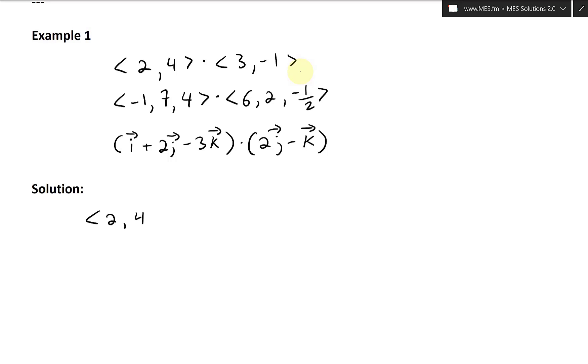So 2, 4 dot product 3, negative 1, these two vectors. This equals 2 times 3 plus 4 times negative 1. And this equals to 6, and then 6 minus 4, this equals to 2.